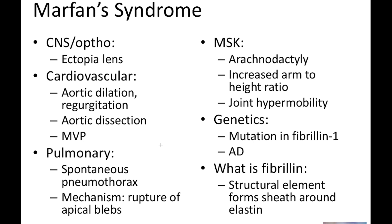We'll first start with CNS and ophthalmology. Remember that Marfan syndrome patients are going to have lens dislocation, and this lens dislocation is starkly contrasted from the lens dislocation that you get in homocystinuria. Remember patients with homocystinuria typically have a marfanoid habitus and they are going to have a deficiency in cystathionine beta-synthase.